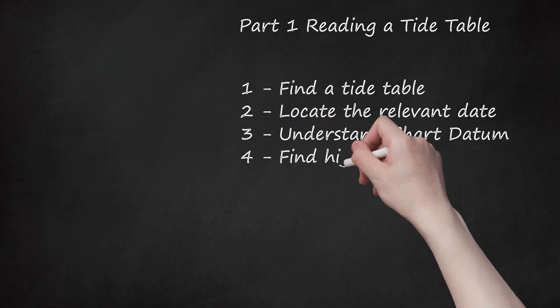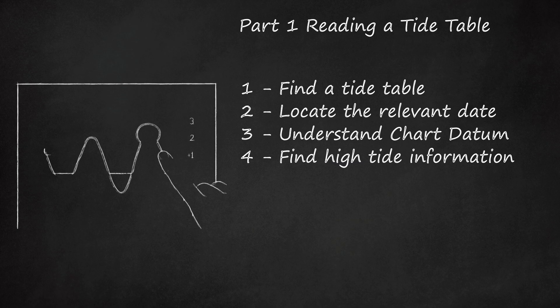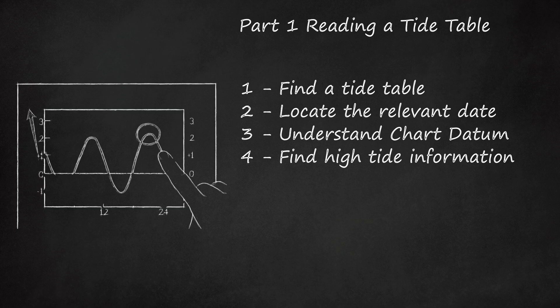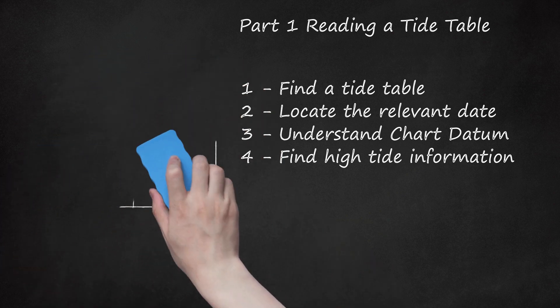Step 4: Find High Tide Information. High tide will be expressed as a positive number, sometimes with a plus sign before it. This number indicates how high above chart datum the tide will be at its greatest swell. A high tide indicated as an 8 tells you that at its highest, the water will be 8 feet above the average low water mark. Remember that outside the United States the metric system prevails and measurements will be in meters, not feet.